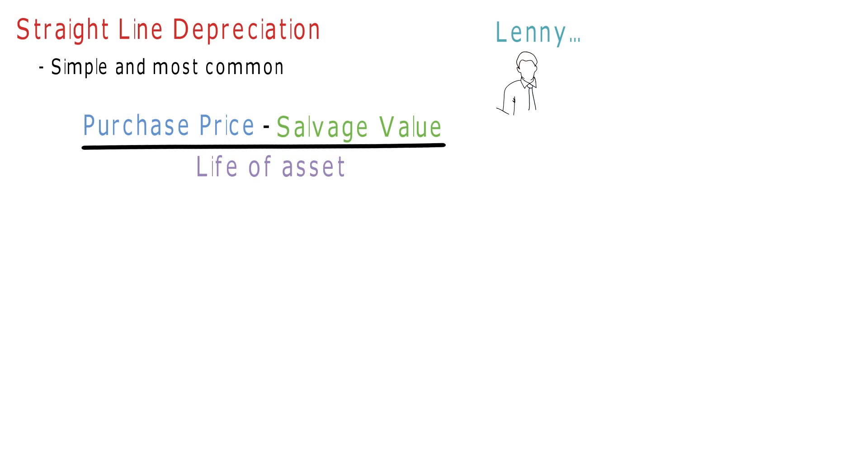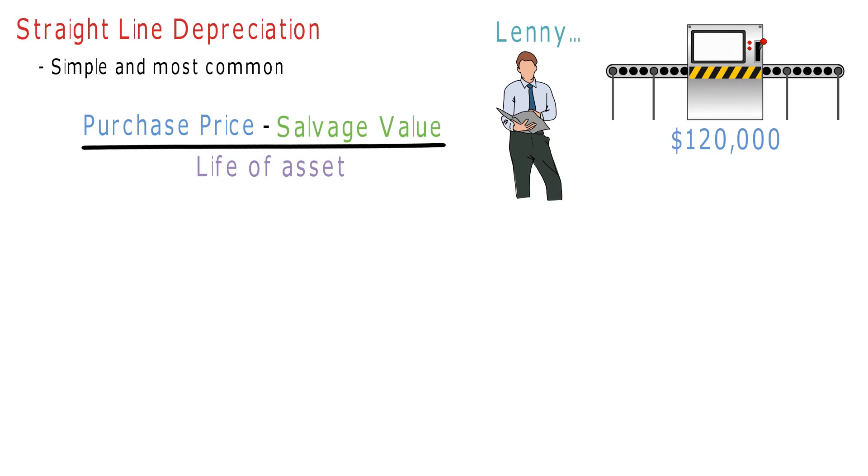Take Lenny. Lenny's just bought an automated conveyor belt for his factory. It cost him $120,000 to buy and has an estimated salvage value of $8,000. It should last 5 years before better equipment is needed.